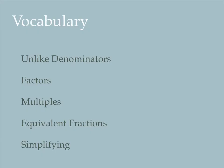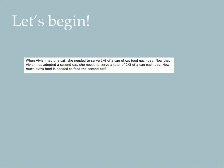As always, let's review our vocabulary. Unlike denominators are denominators that have different numbers, so like 1/8 and 1/4. Factors are numbers that can be multiplied together to make bigger numbers. Multiples are numbers that can be divided without any remainder. An equivalent fraction is a fraction that maybe looked different, but has the same value, like 1/4 and 2/8. And simplifying is when you get the smallest form of the number possible.